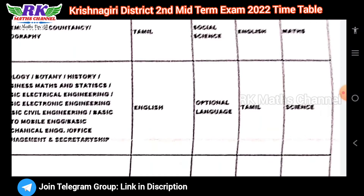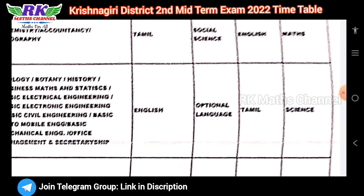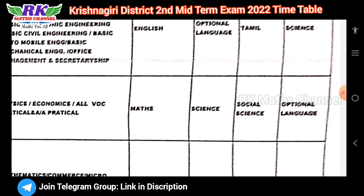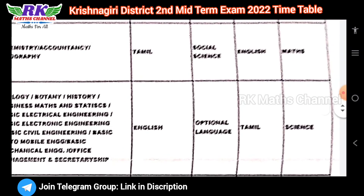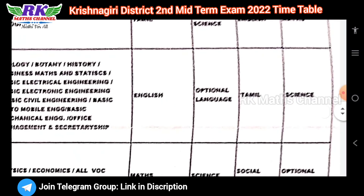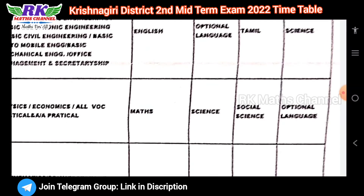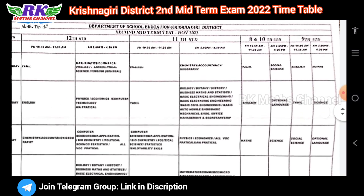Next day, November 17th: morning is English and afternoon is optional language. If you read Tamil, it is optional language. Next day, November 18th: morning is maths and afternoon is science. For the 9th class: November 16th morning is English and afternoon is maths. November 17th is Tamil and science. Friday November 18th: 9th class is social and optional language. So this is the 9th to 12th time table.